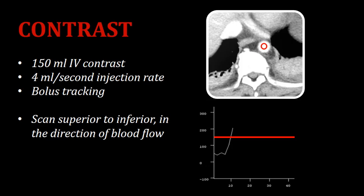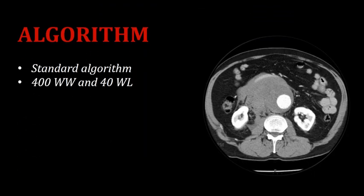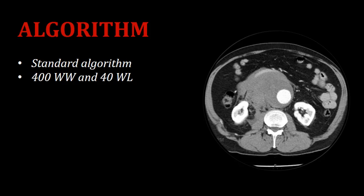Keep in mind that there is a specific direction we should scan this patient's anatomy. We'll scan from superior to inferior — that is, from the diaphragm down to the pelvis — which makes sense because that's in the direction of blood flow, and therefore in the same direction as the bolus of contrast. Since we're looking at the soft tissues and vasculature, we'll reconstruct into the standard algorithm and display using a 400 window width and 40 window level.